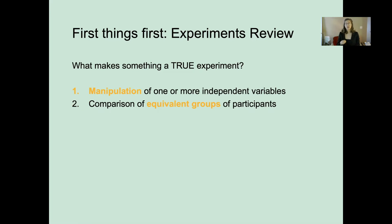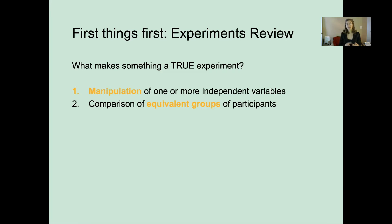We also compare equivalent groups, meaning there are no confounding differences between our groups in the experimental conditions. They don't have any differences between the two groups before we begin — not in terms of how many people are in there, but equivalent in terms of characteristics. We can assure equivalent groups through practices like random assignment, matching, and within-subjects design.